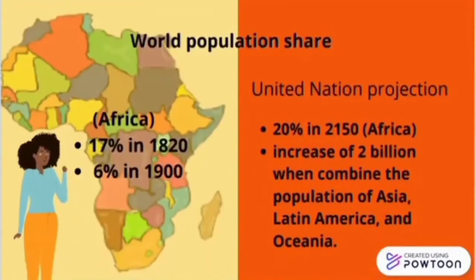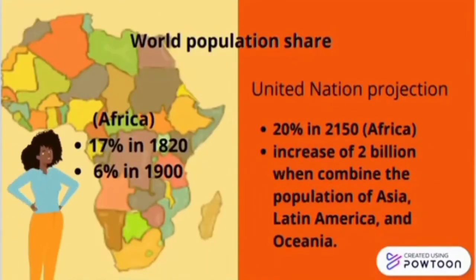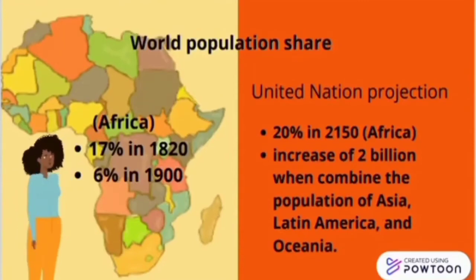Looking at world population share: Africa had 17% in 1820 and 6% in 1900. United Nations projections show 20% by 2150 for Africa, and an increase of 2 billion when combining the populations of Asia and Latin America.